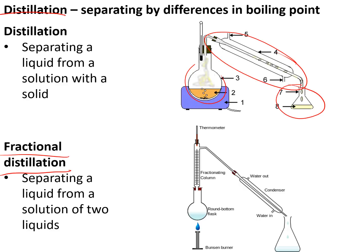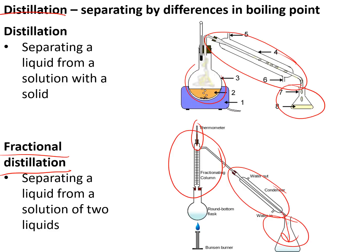Fractional distillation collects liquids from a mixture of two or more liquids. It has a fractionating column that allows a better division between the liquids. If you look at the thermometer, each time a new liquid boils, the temperature changes to the boiling point of that particular liquid. Again, we have the condenser and you collect the different fractions, changing your flask over each time the temperature changes on the thermometer.